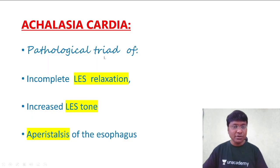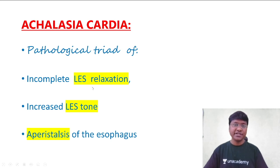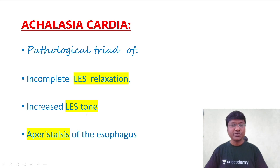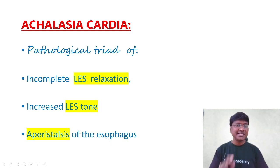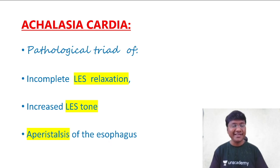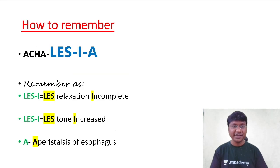Now, achalasia cardia is a pathological triad consisting of: incomplete lower esophageal sphincter relaxation, increased lower esophageal sphincter tone, and aperistalsis of the esophagus. This is the triad. Now, how will you remember this particular triad in the form of a mnemonic?